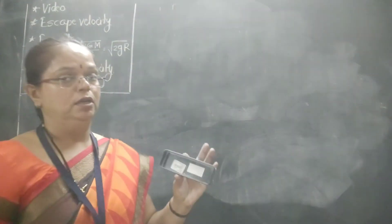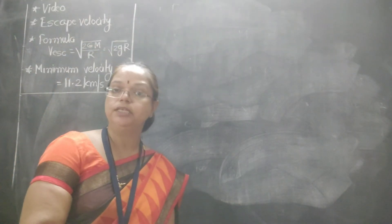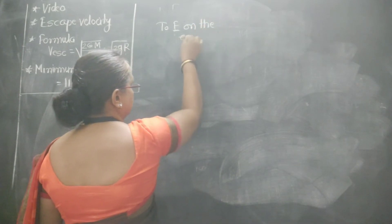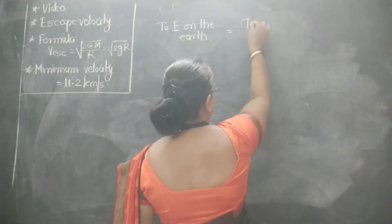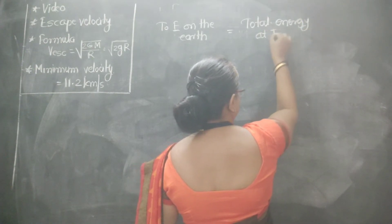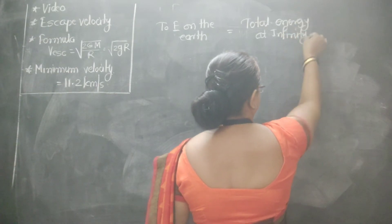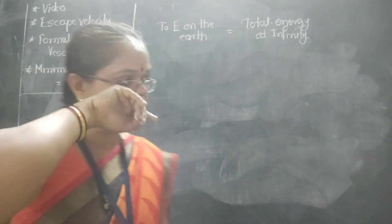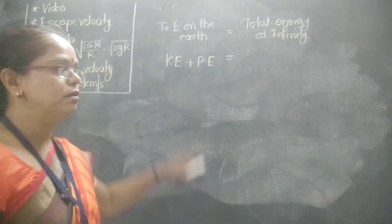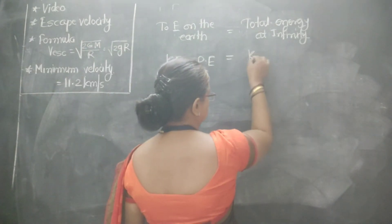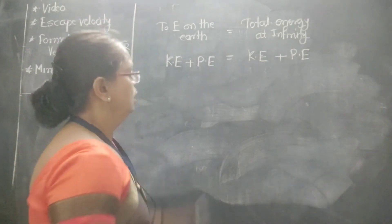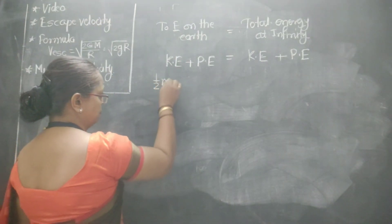According to the law of conservation of energy, total energy on the surface of the earth equals total energy at infinity. Total energy means kinetic energy plus potential energy. On the surface: KE plus gravitational PE. At infinity: kinetic energy at infinity plus potential energy at infinity. Kinetic energy is due to motion, that is half mv squared.